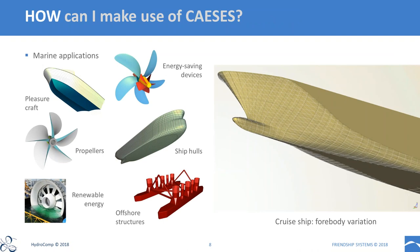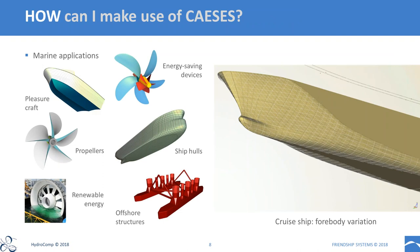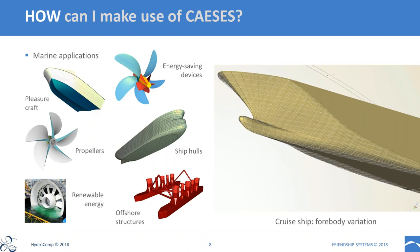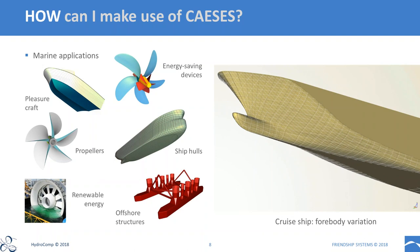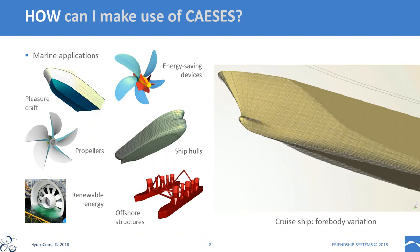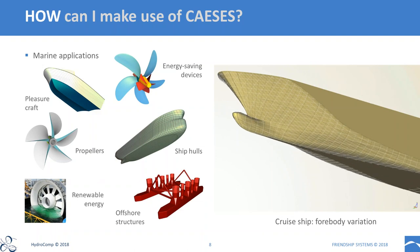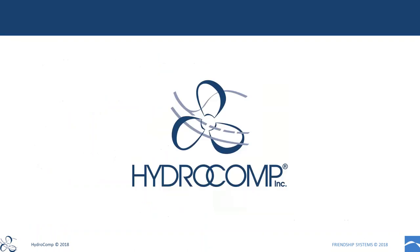CASIS can be used across a range of marine applications: ship and boat hulls, energy saving devices, propellers, offshore infrastructure, and renewable energy systems in the marine environment. I hope this gives you a good idea of what we do at Friendship Systems, and now I'd like to switch over to Don who will tell us more about HydroComp and their system NAVCAD.